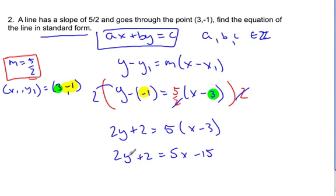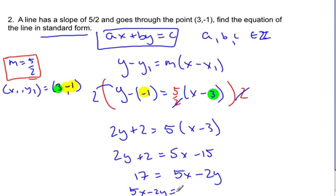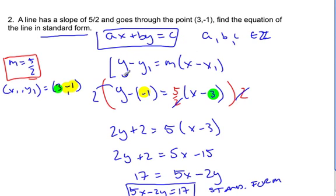Bring everything over to the other side. I'll make it a positive x since that looks nicer. So 5x minus 2y equals 17. This is in standard form: 5x minus 2y equals 17. Multiplying through by the denominator gets rid of the fraction and makes the algebra easier. I like this equation — it makes things much easier once you get used to it.